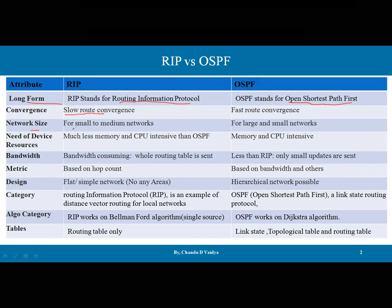The next parameter is network size. The RIP protocol is used for small to medium networks only, because there is a limitation of 15 hops. If the network is very large, we will not prefer RIP. In terms of OSPF, it is preferred for both large and small networks.